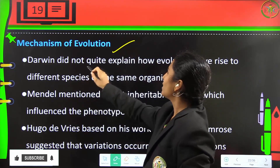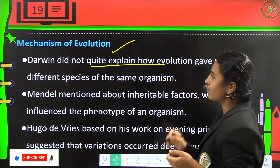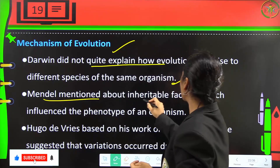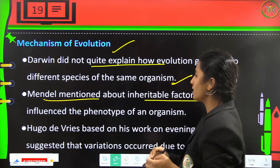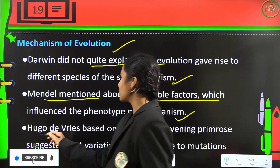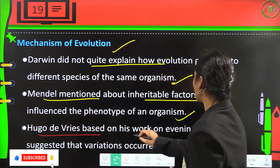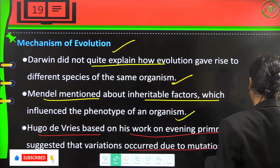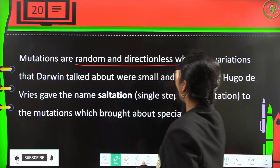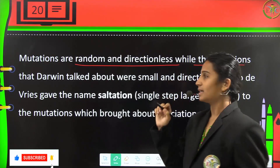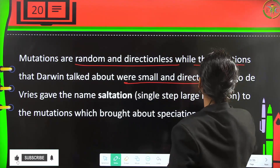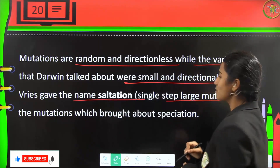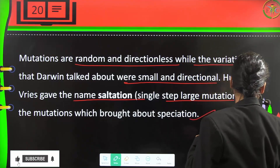Darwin did not fully explain how evolution gave rise to different species from the same organism. Mendel mentioned inheritable factors which influence the phenotype of an organism. Hugo de Vries, based on his work on evening primrose, suggested that variations occur due to mutations. Mutations are random and directionless, while Darwin's variations were small and directional. Hugo de Vries coined the term saltation — a single-step large mutation — which brought about speciation.